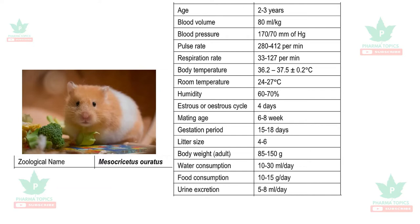The gestation period of the hamster is 15 to 18 days, litter size is four to six per pregnancy, body weight is 85 to 150 grams. Food consumption is 10 to 15 grams per day and urine excretion is 5 to 8 ml per day. The feed consists of soya bean meal, carrot, and corn. The two species are the Syrian or golden hamster and the Chinese hamster.